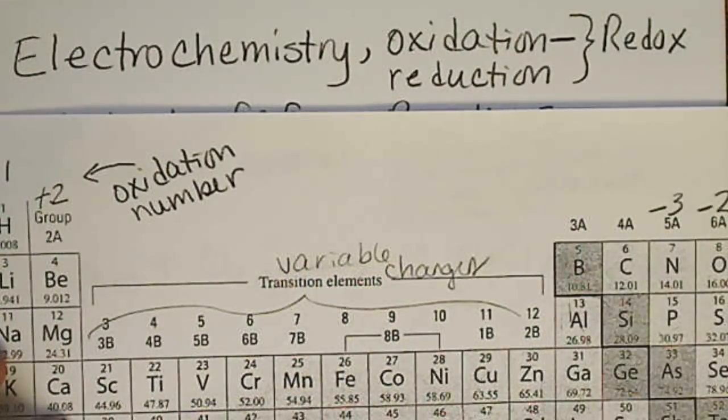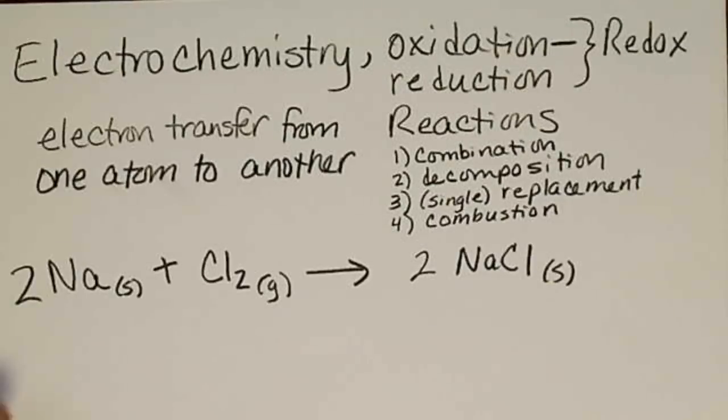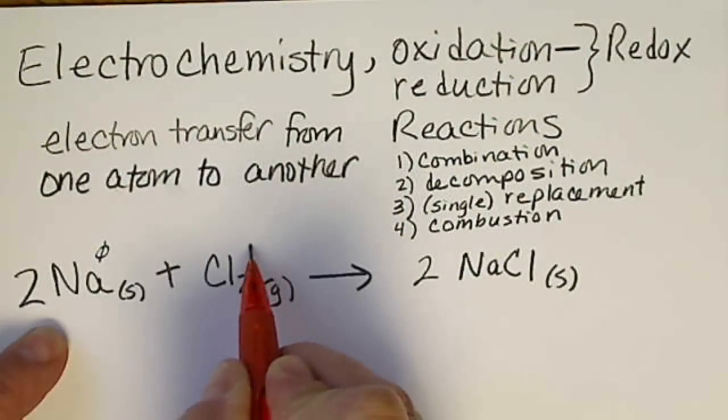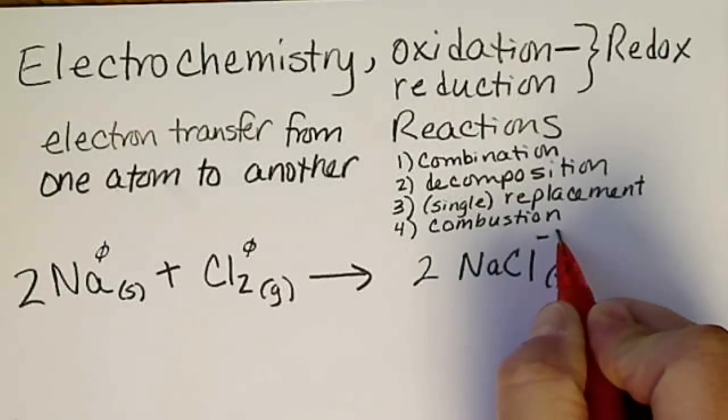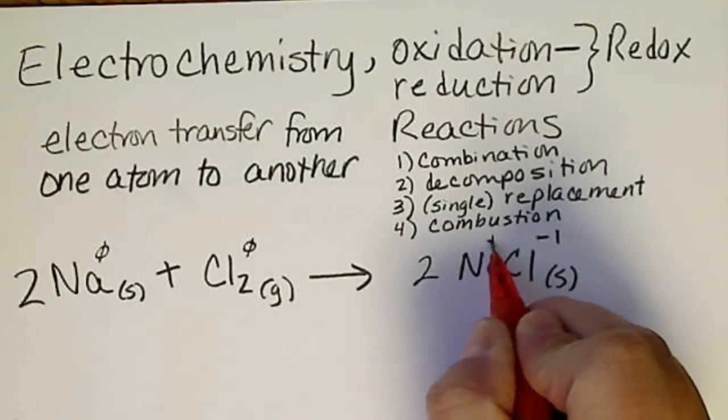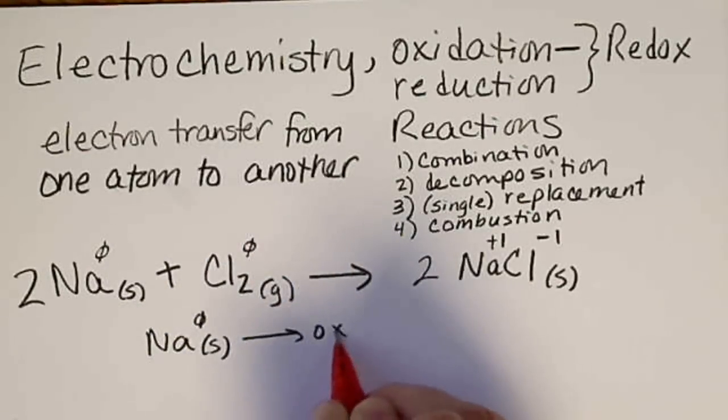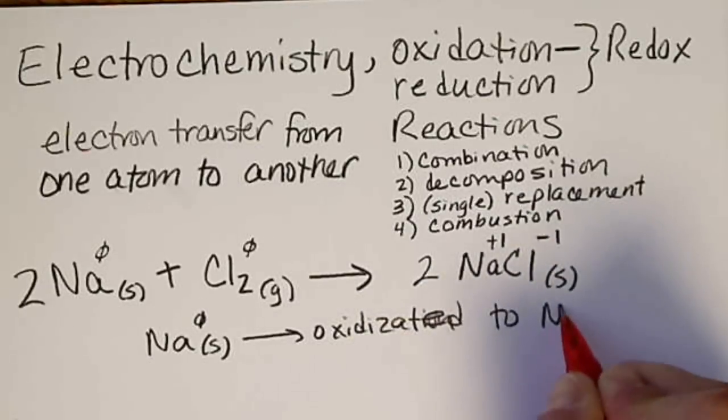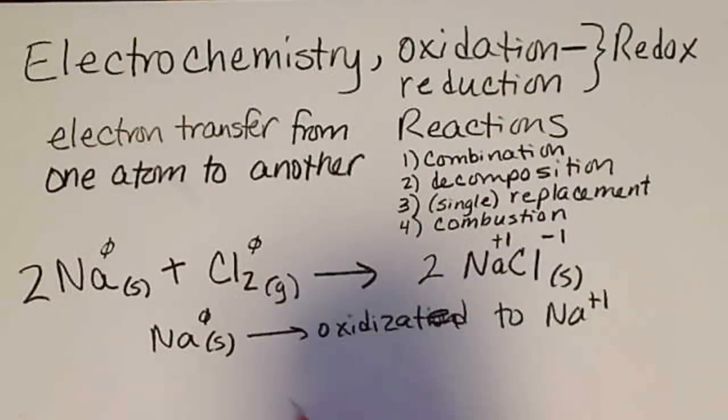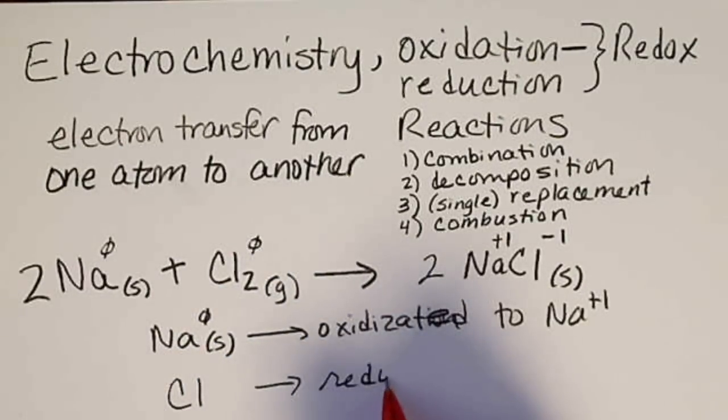The transition metals have variable charges. Remember, elements have a charge of zero. Chlorine is a diatomic element. During this combination reaction, chlorine steals an electron from sodium, and sodium loses its electron to chlorine. The sodium metal, with a charge of zero, was oxidized to sodium plus one ion. And chlorine, an atom of chlorine, was reduced to Cl minus one.